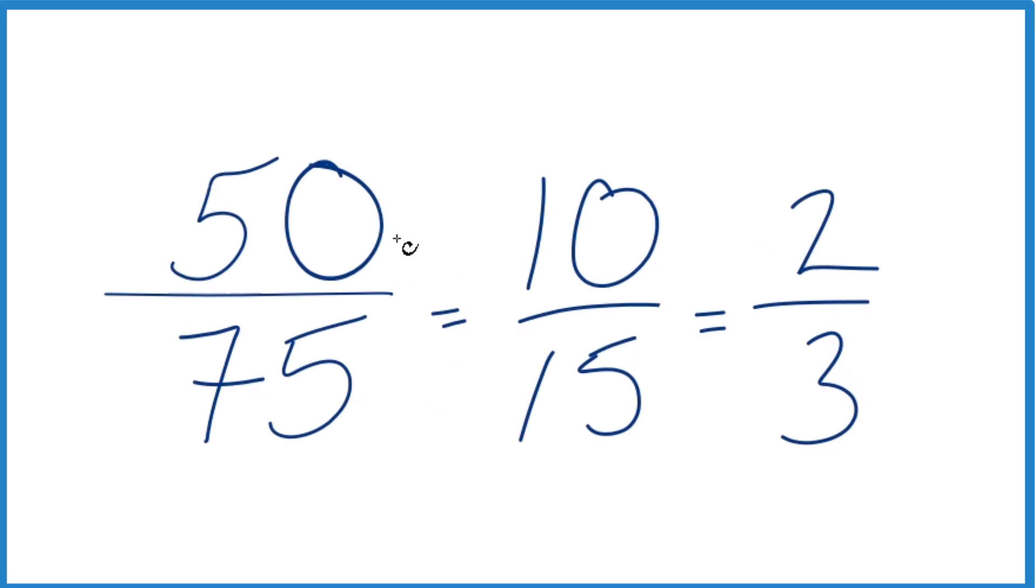And all of these are equivalent. 50 divided by 75, 10 divided by 15, or 2 divided by 3. They'll give you the same decimal answer, just that we've simplified 50/75 down to 2/3.